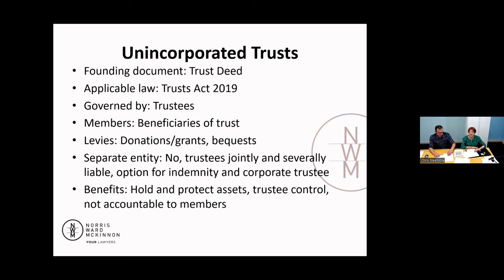I'm going to have a chat about trusts. The first entity I'm going to talk about is unincorporated trusts. A lot of you are probably familiar with trusts, in particular family trusts, which are very common in New Zealand. The sort of trust a lot of you will be familiar with is where there are named individual beneficiaries, but catchment groups and other types of organizations can have instead a purpose for the trust — for example, to undertake whatever work your catchment group wants to do.